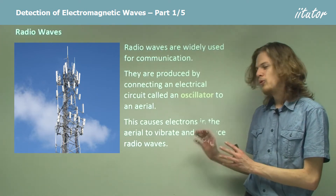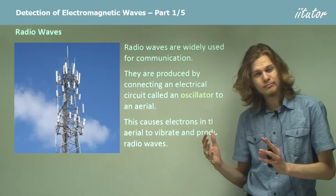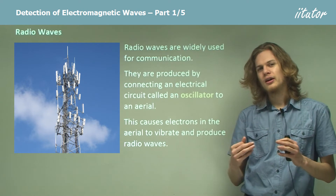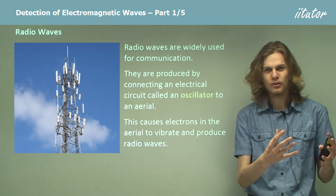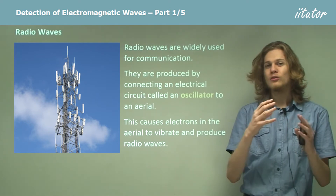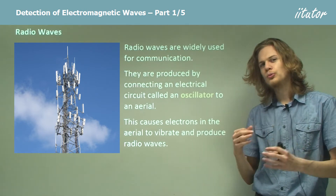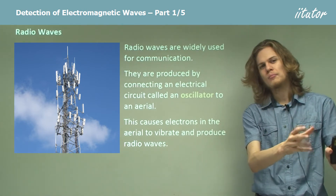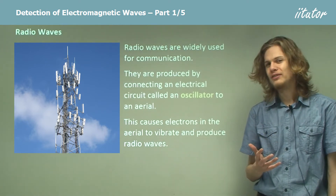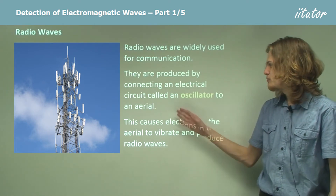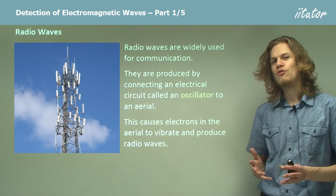The electrons vibrate back and forth and create a changing electric field. That changing electric field creates a changing magnetic field, and the changing magnetic field creates another changing electric field. We get this pattern of electric and magnetic fields that propagates through empty space, or in this case through the air — this is of course what an electromagnetic wave is. By changing the frequency of the oscillating circuit, we can change the frequency of the wave that it produces.